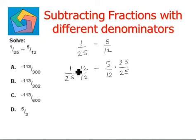So 12 times 1 is 12, 25 times 12 is 300, minus 25 times 5 is 125, and the denominator is 300. Now we have similar denominators, so 300.